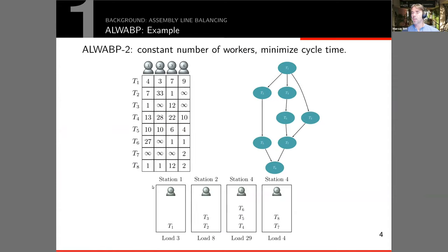For example, you assign to station one, two, three, and four workers two, one, three, and four. Station one receives the first task, the second station the tasks two and three, and so on, and then you get different loads. In this case we have loads 3, 8, 29, and 4, so the maximum load is 29 and the cycle time would be 29. Over all these possible assignments we want to minimize the cycle time or maximize the productivity.